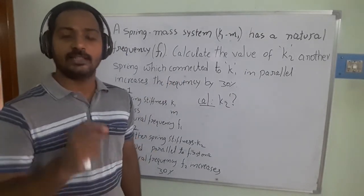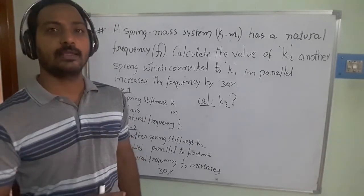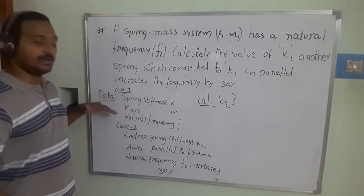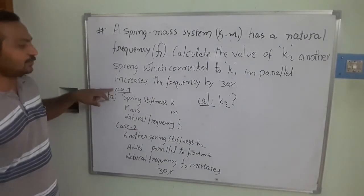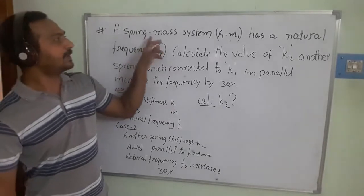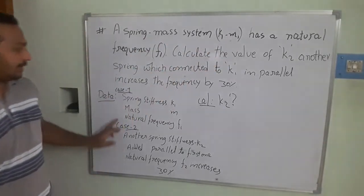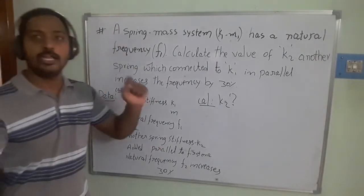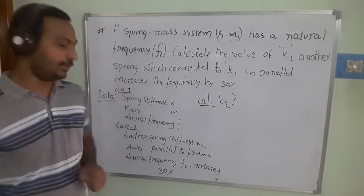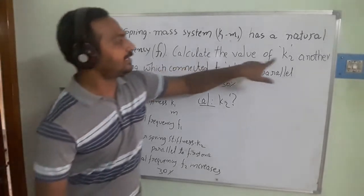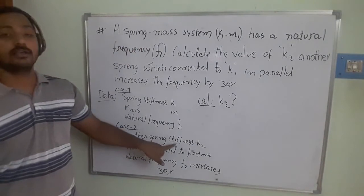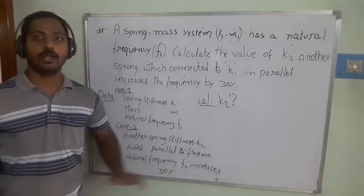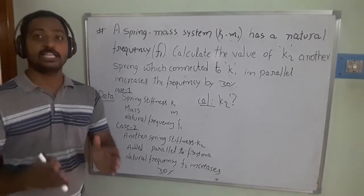In this problem we have two conditions. The first condition is the mass attached with a single spring. The second condition is two springs attached to the mass in parallel. The given data: stiffness of the first spring is k1, mass is m, and natural frequency is f1. No numerical values are provided — only symbolic values. In the second case, we need to calculate k2, the spring constant of the added spring in parallel.